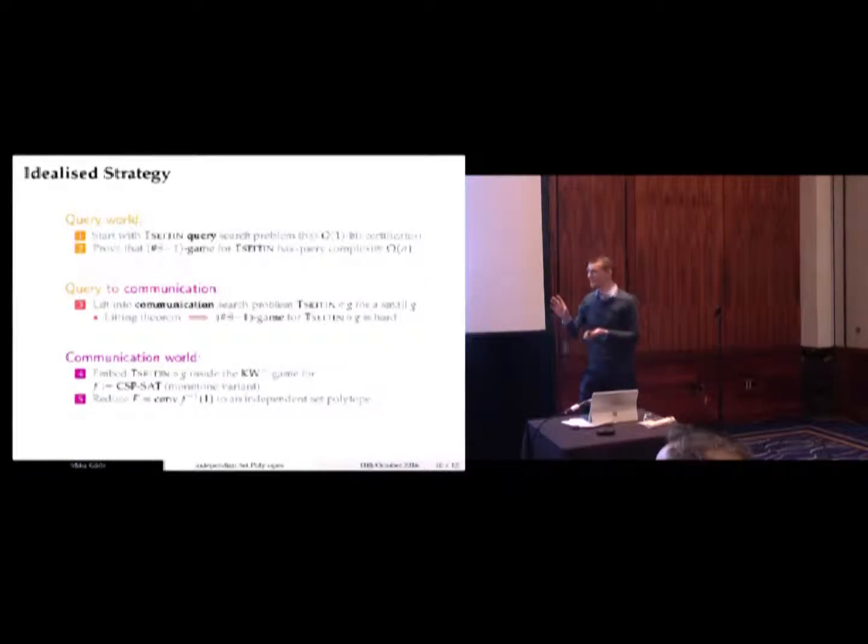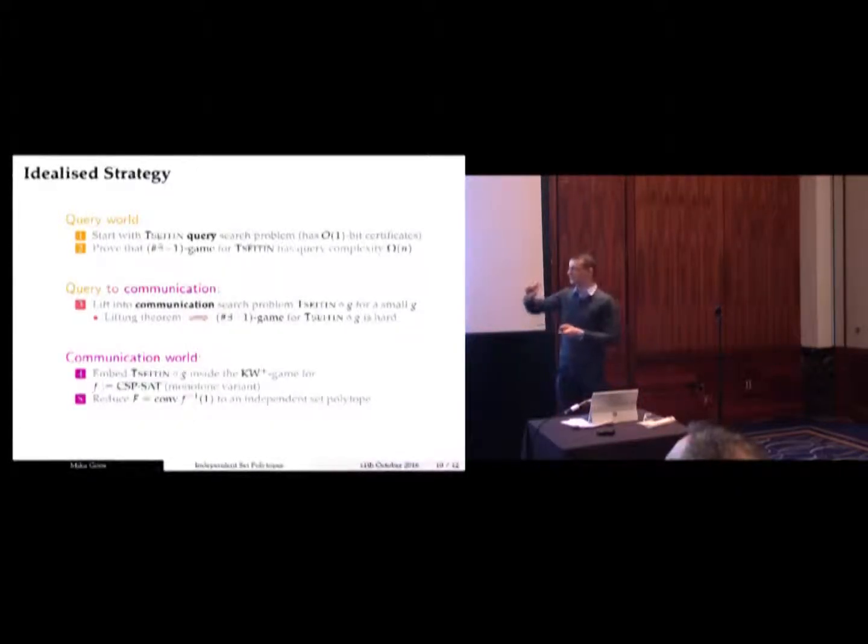In the communication world, you have a search problem whose associated number of witnesses minus one game is hard. It's known that we can take any search problem and reduce it to the monotone Karchmer-Wigderson game of some monotone function. It's a known reduction. The reduction is efficient if your search problem has low non-deterministic complexity. This is something we very carefully control in our case. So then you have a monotone Karchmer-Wigderson game whose number of witnesses minus one game is hard. Take the convex hull of the yes input. That's an explicit hard polytope. At the very last step, you can reduce this polytope to an independent set polytope. That's very much like an NP-hardness-type reduction, really standard and not particularly interesting.